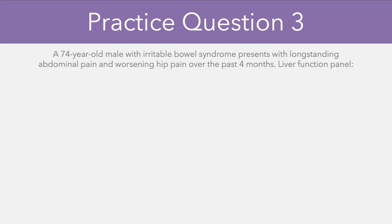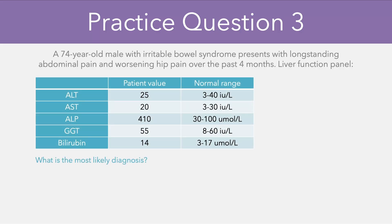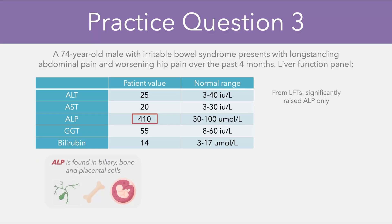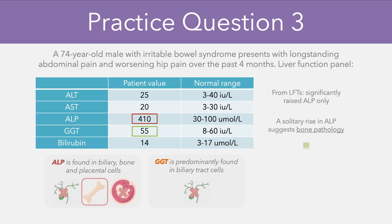For the final case, a 74-year-old male with irritable bowel syndrome presents with long-standing abdominal pain and worsening hip pain over the past four months. The patient has a significant rise in their ALP level, while the rest of the enzymes are normal. We know that ALP is found in the biliary cells, bone, and placenta, and that GGT is found predominantly in the biliary tract. If there was a biliary pathology, we would expect a rise in both ALP and GGT — but the GGT level is normal, making a biliary tract problem less likely. The rise in ALP is therefore most likely coming from the bone, and given this is a 74-year-old male, the most likely diagnosis is Paget's disease of the bone.